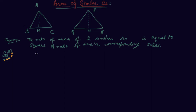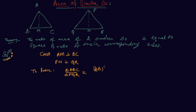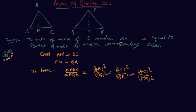So I'll write this in my construction part: perpendicular AM is perpendicular to BC, and PN is perpendicular to QR. We need to prove that area of triangle ABC to area of triangle PQR equals AB² by PQ², which equals BC² by QR², which equals AC² upon PR². This is what the statement states — the ratio of area of two similar triangles is equal to the square of ratio of their corresponding sides.